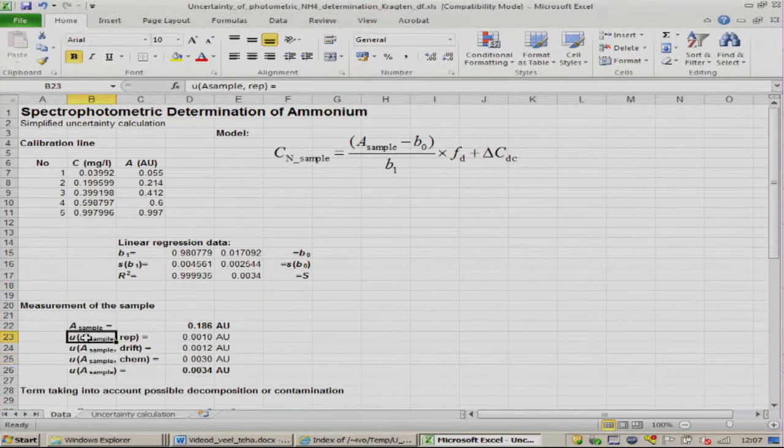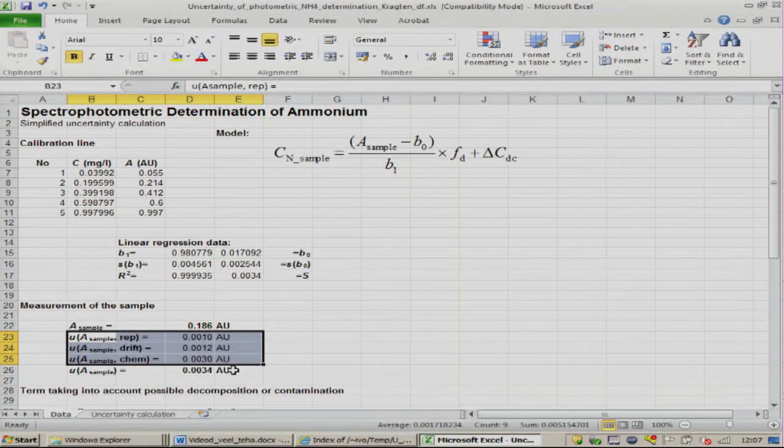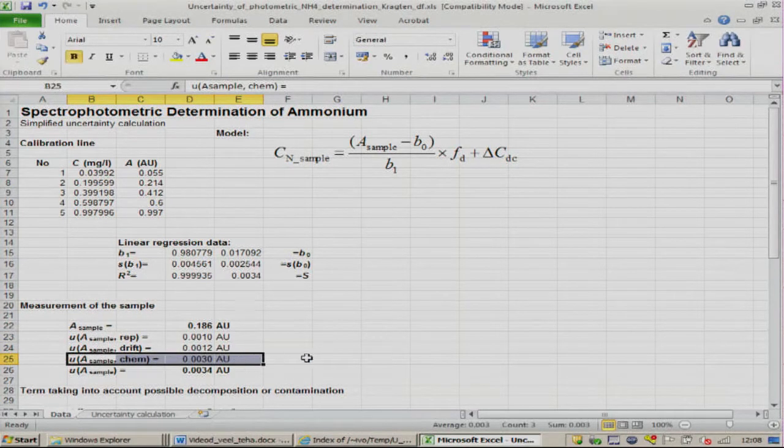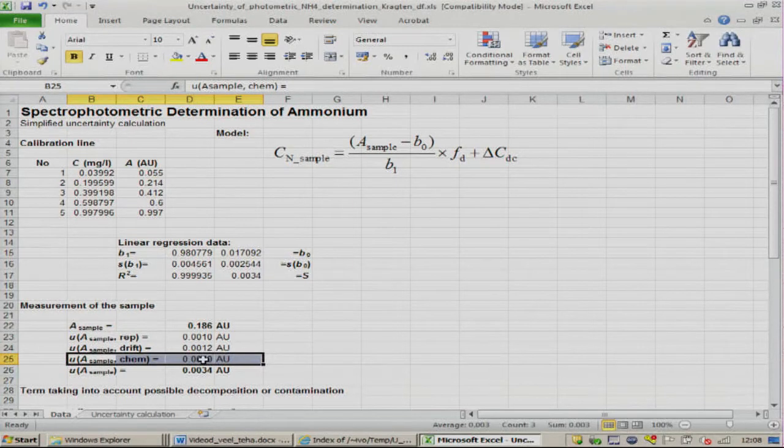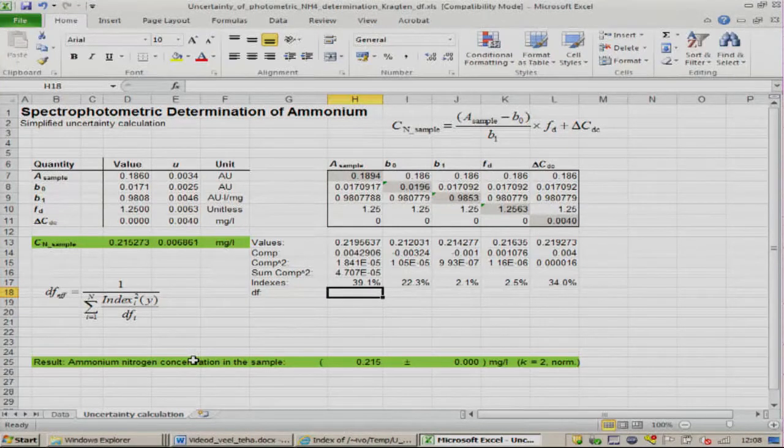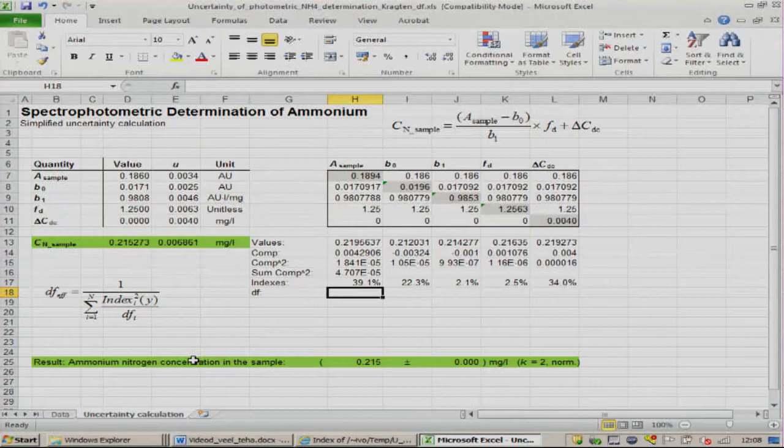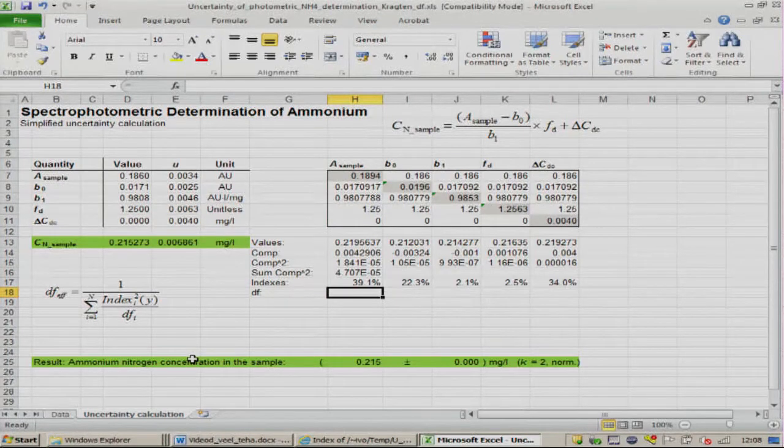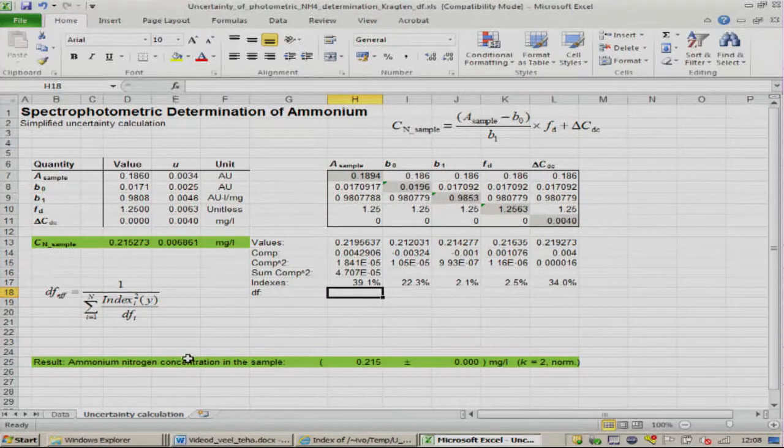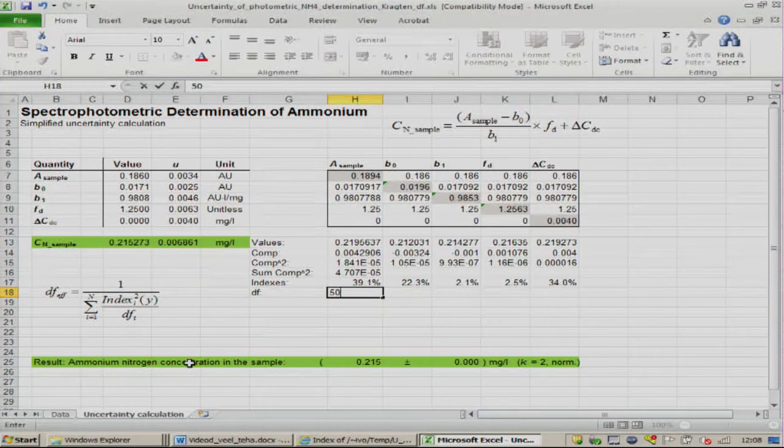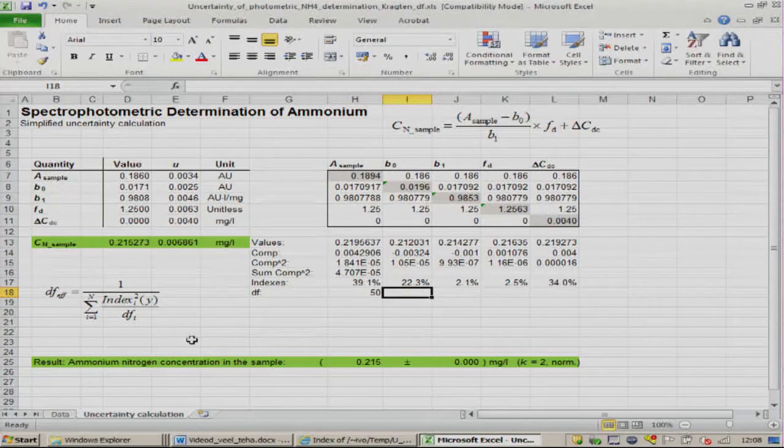If we look at the sample, it had three uncertainty components. The most influential is the uncertainty due to chemical interference. This is a B-type uncertainty estimate. Whenever we have a B-type uncertainty estimate, the number of degrees of freedom is either infinity or at least very large. Very often people use something like 100 or 50 for the number of degrees of freedom of such quantities. We will assume that the number of degrees of freedom of the sample is 50.